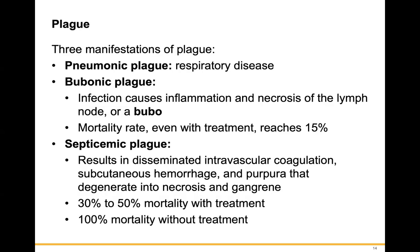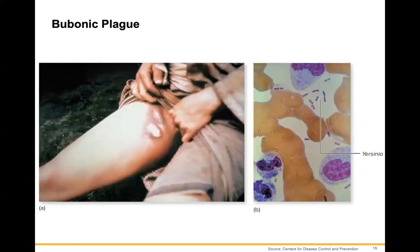The plague has three manifestations: pneumonic plague, which is a respiratory disease; bubonic plague, which is an infection causing inflammation and swelling of the lymph node or bubo, with a mortality rate of up to 15% even with treatment; and septicemic plague, which results in disseminated intravascular coagulation, subcutaneous hemorrhage, and a 30-50% mortality rate with treatment. Without treatment, the mortality rate approaches 100%. Buboes form within the lymph nodes, visible in the axillary region and groin.